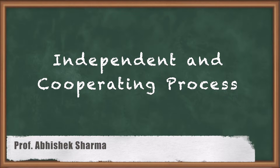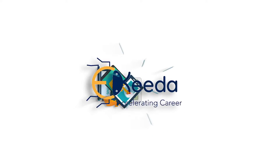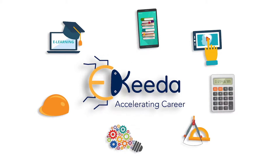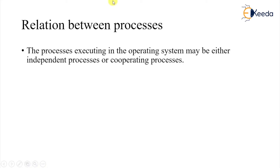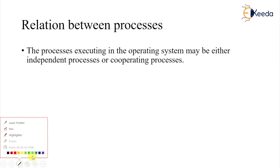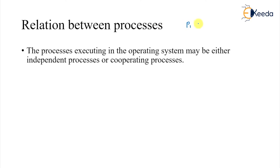In today's class we are going to talk about two different kinds of processes: independent and cooperating. We are talking about the relation between processes, and in this relation we have two categories. Processes P1 and P2 can be independent of each other, meaning execution and state of P1 does not affect the execution and state of P2 — so there is no relation between them.